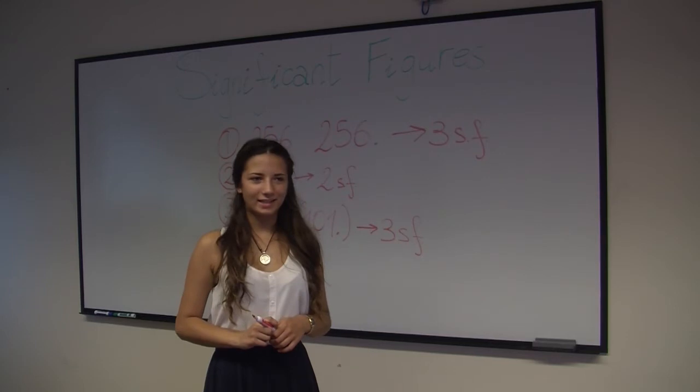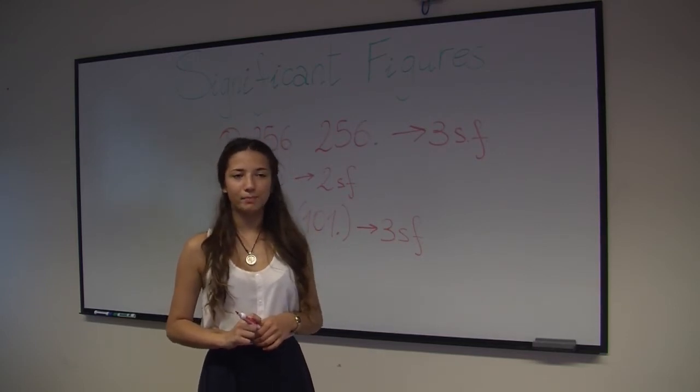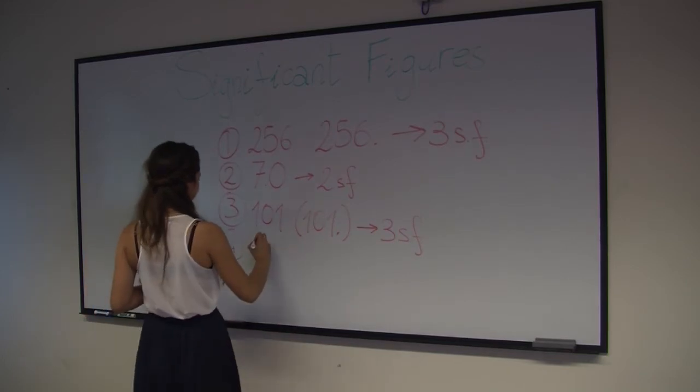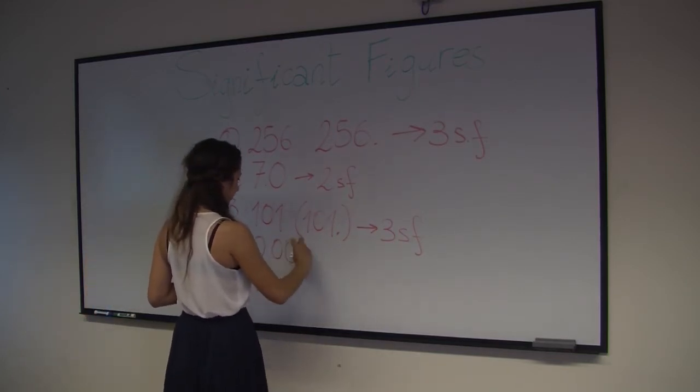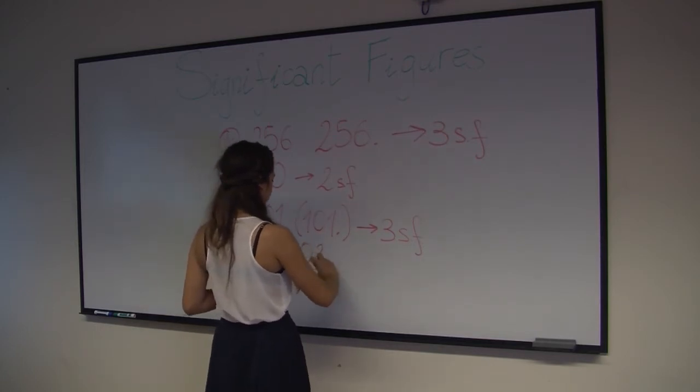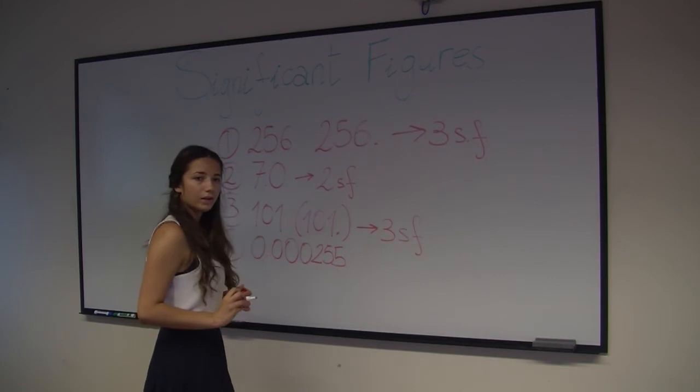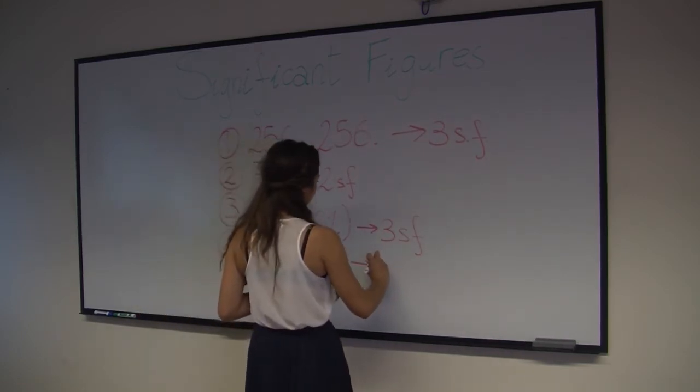The last rule is that zeros used for spacing the decimal point are not significant. Let's look at another example. The number 0.000255 only has three significant figures.